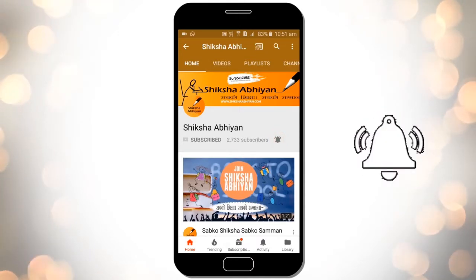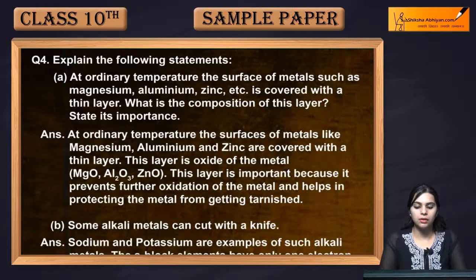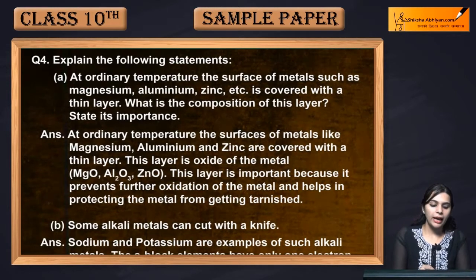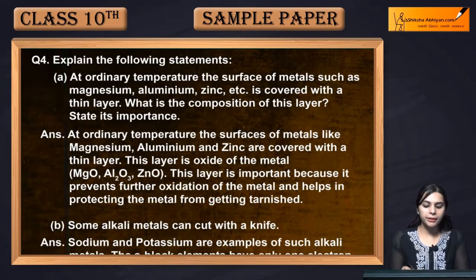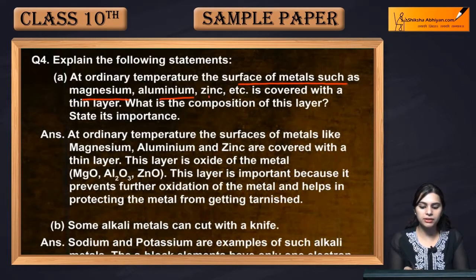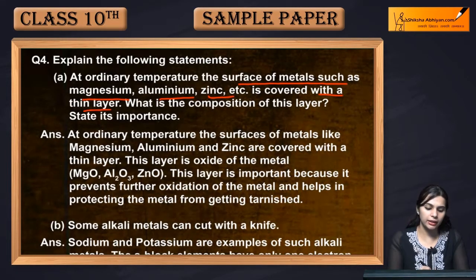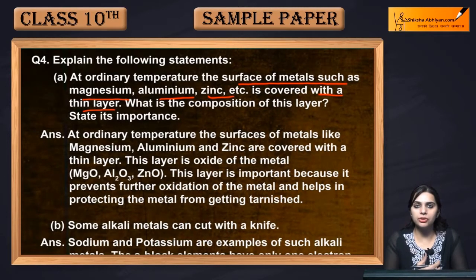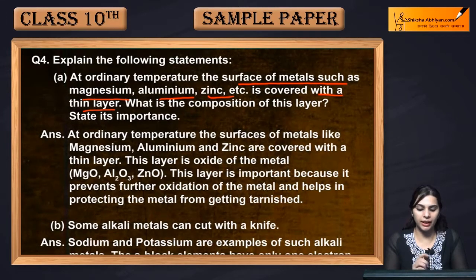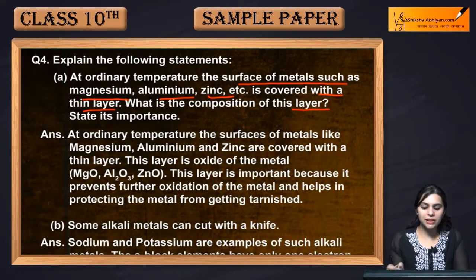Hello students, our next question is question number 4: at ordinary temperature, the surface of metals such as magnesium, aluminium, zinc, etc. is covered with a thin layer. At room temperature, when our metals have a thin layer on them, what is the composition of this layer and state its importance?